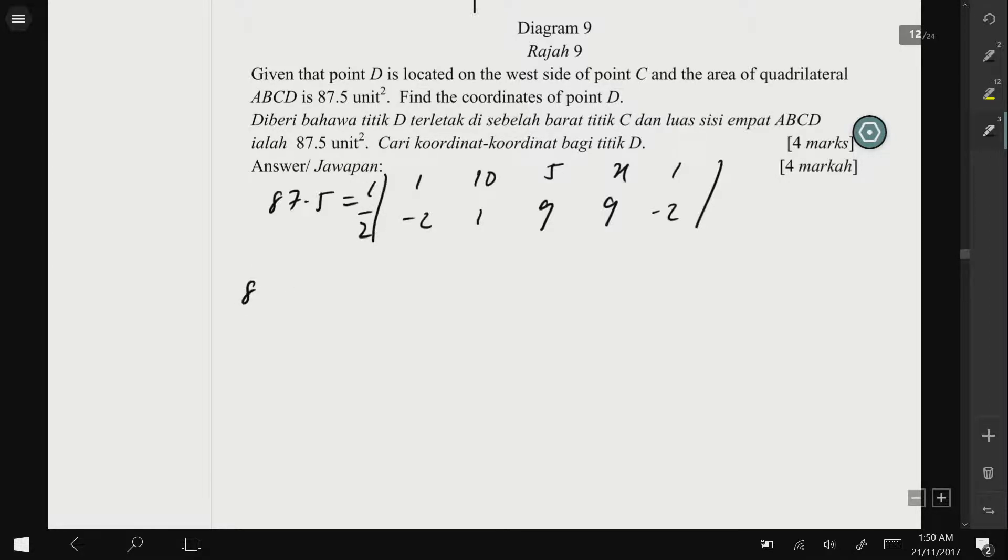And don't forget to put half here. So 87.5 = 1/2 |1 × 1, 10 times 9 is 90, 5 times 9 is 45, and x times -2 is -2x minus -20|.